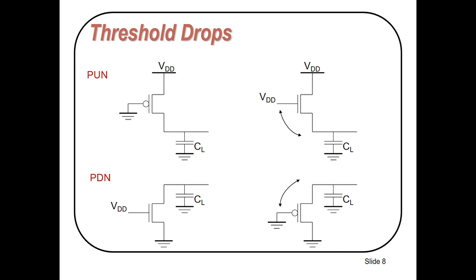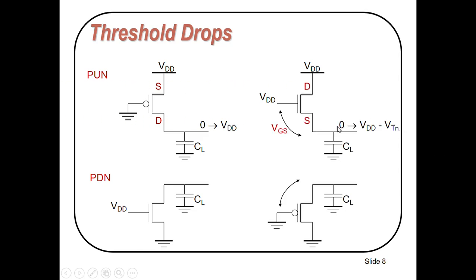In the pull-up network we will use P-MOS transistors only — we will not use N-MOS transistors in the pull-up network. When we apply low gate voltage, the P-MOS transistor will turn ON and charge the output capacitor from 0 to VDD. If we were to put an N-MOS transistor in the pull-up network, it would only charge the output capacitor from 0 to VDD minus VTN, where VTN is the threshold voltage. That's why we use only P-MOS transistors in the pull-up network.